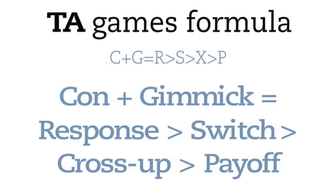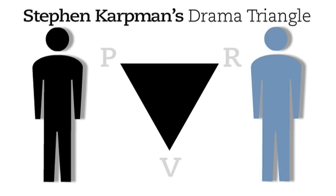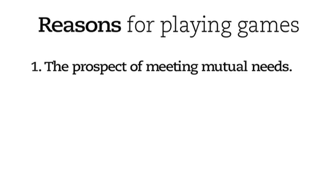Stephen Karpman provided another way to conceptualise games in his famous drama triangle, employing the three dramatic roles of victim, persecutor and rescuer. Transferring the Why Don't You Yes But game to this format, we have A starting out as victim and B as rescuer. The switch comes when A and B change roles, with A becoming persecutor to B's victim.